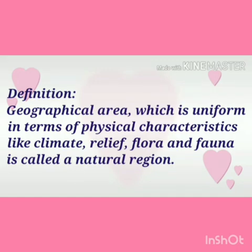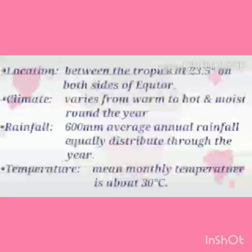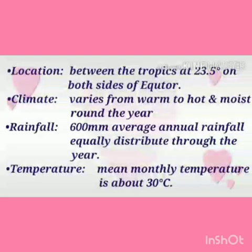A geographical area which is uniform in terms of physical characteristics like climate, relief, flora and fauna is called a natural region. Now let's define major natural regions of the world. The first one is tropical regions. Location: this region is located between the tropics at 23.5 degrees on both sides of the equator.